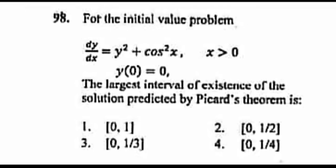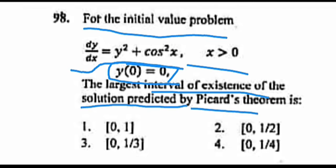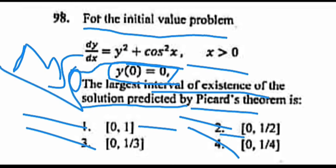Hello guys, welcome to Maths for Tech. This is CSIR NET question June 2015, Part C, question number 98. This question is from ODE. The question is: for the initial value problem dy/dx = y² + cos²x, where x > 0 and y(0) = 0, then the largest interval of existence of solution predicted by Picard's theorem is (0,1], (0,1/2], (0,1/3], or (0,1/4]?